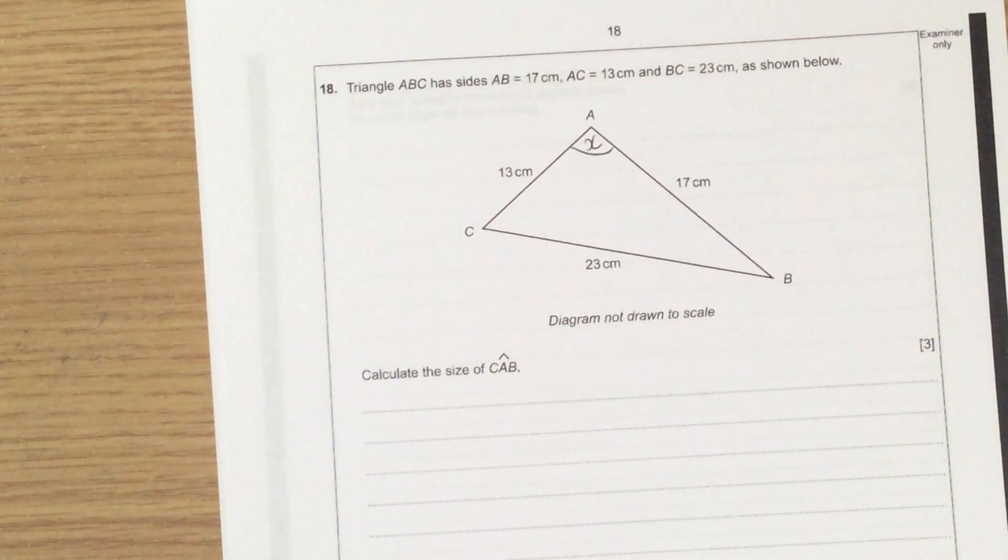As soon as I've got a non-right angle triangle, I'm thinking sine or cosine rule. If I want to use cosine rule, I need to know all three sides. I have all three sides, so I can use cosine rule.